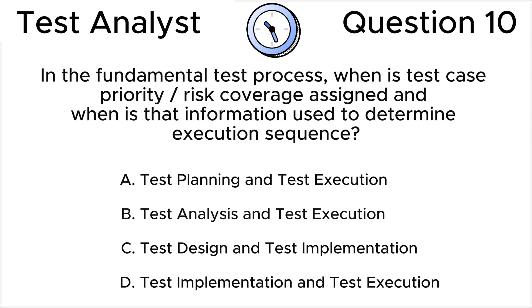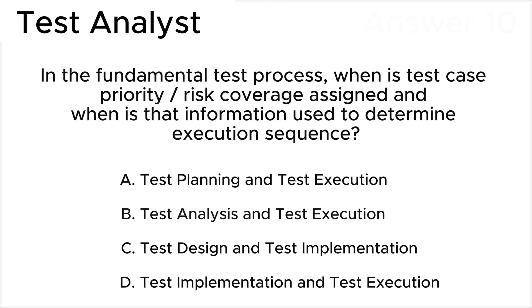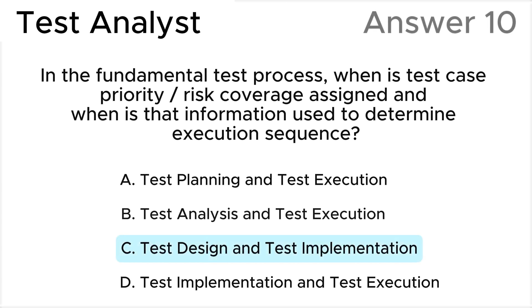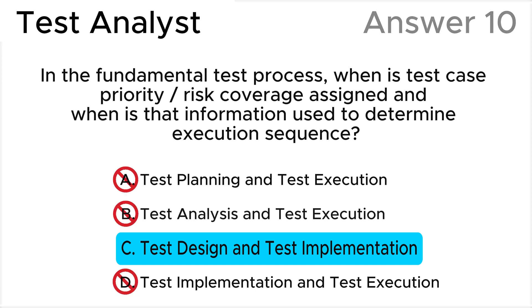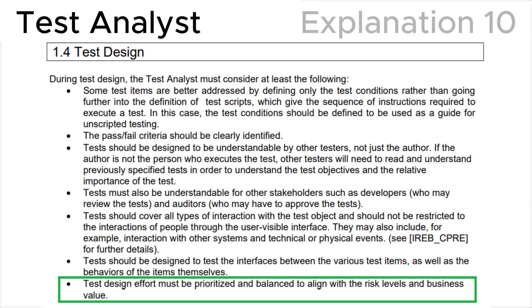The correct answer is C: test design and test implementation. According to the ISTQB syllabus, risk and priority assignment occur during test design as the test cases are designed to test particular test conditions. The test cases are then ordered for execution, often based on priority and risk, during the test implementation step. All other answers are wrong.